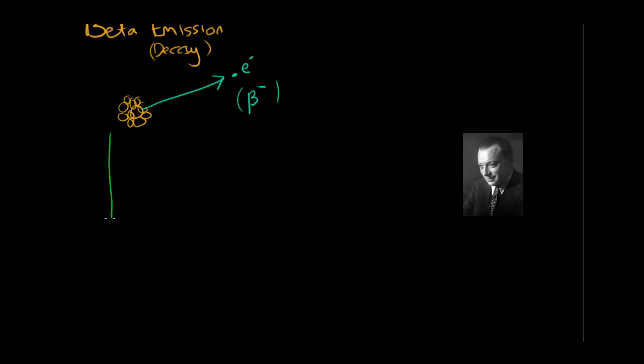So here's our graph of energy on this axis versus the number of beta particles that were thrown out from a nucleus. And they didn't see two or three or four discrete energy levels as you would expect. They saw a range of energies.